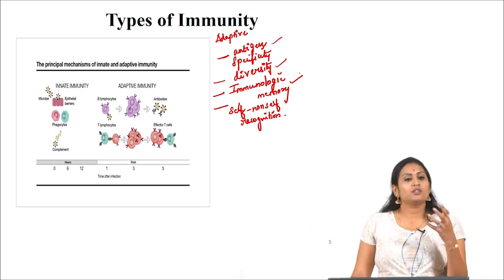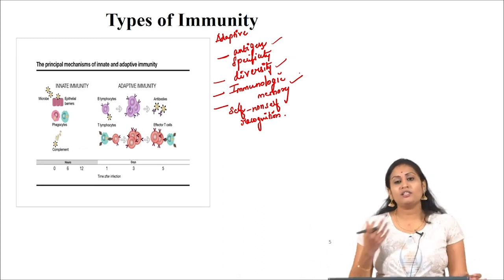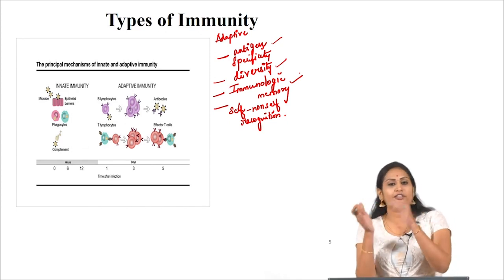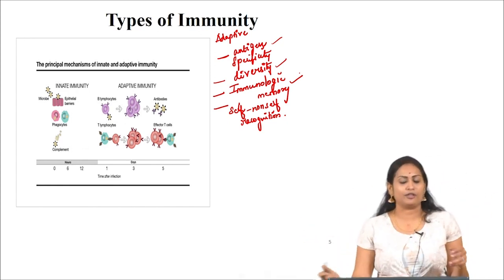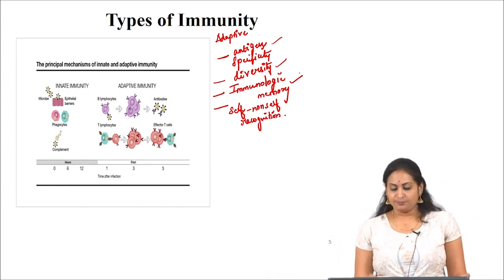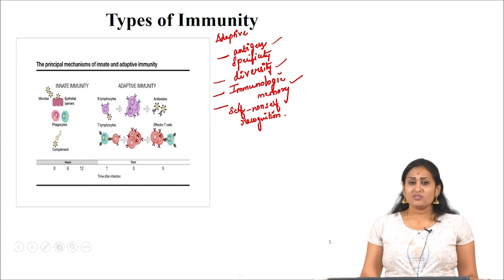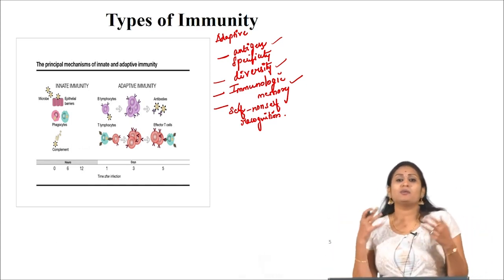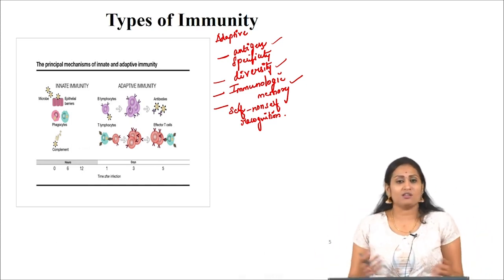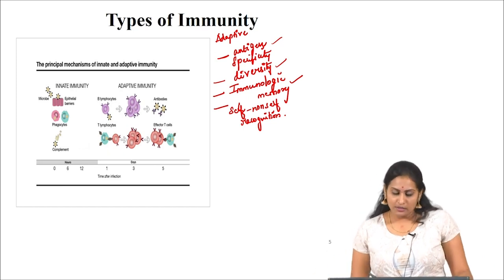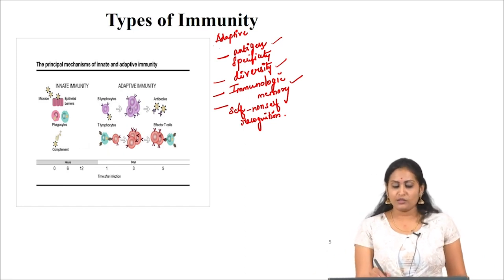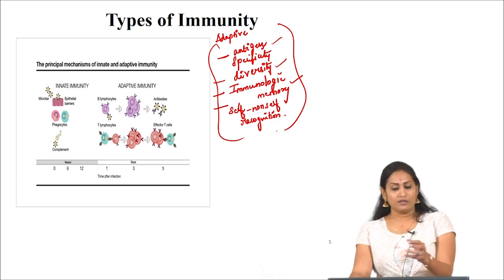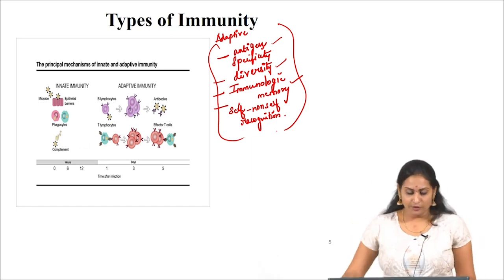If the immune system fails to differentiate between self and non-self components it will lead to other responses that could be fatal. These are the four major characteristics of adaptive immunity.